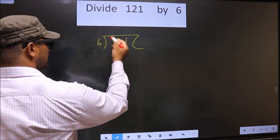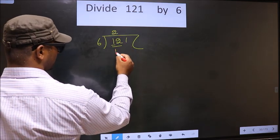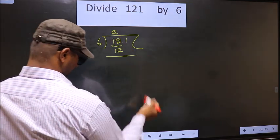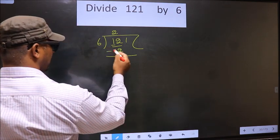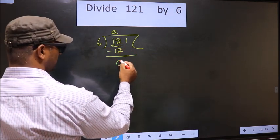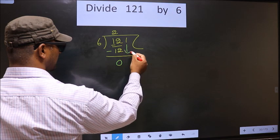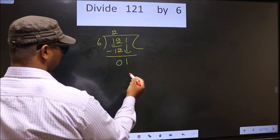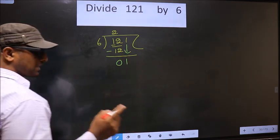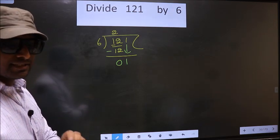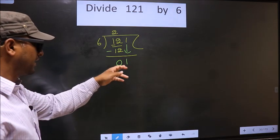When do we get 12 in the 6 table? 6 times 2 is 12. Now you subtract 12 minus 12, 0. Now you bring down the beside number, that is 1. This is where the mistake happens and the mistake is this: here